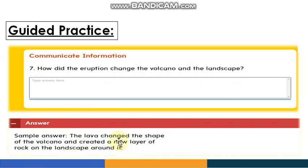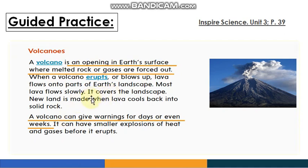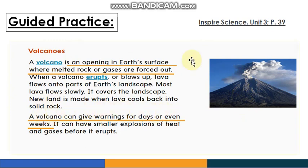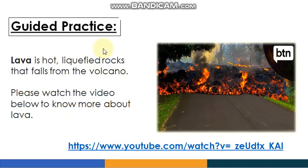This is because the lava covers the landscape and new land is made when lava cools back into solid rock. When the lava comes out from the volcano, it will be very hot and cover the landscape. After that, new land is made when it cools. Now let's talk about lava — let's watch the video together first, and when you come back we will read: lava is hot liquefied rock that falls from the volcano.